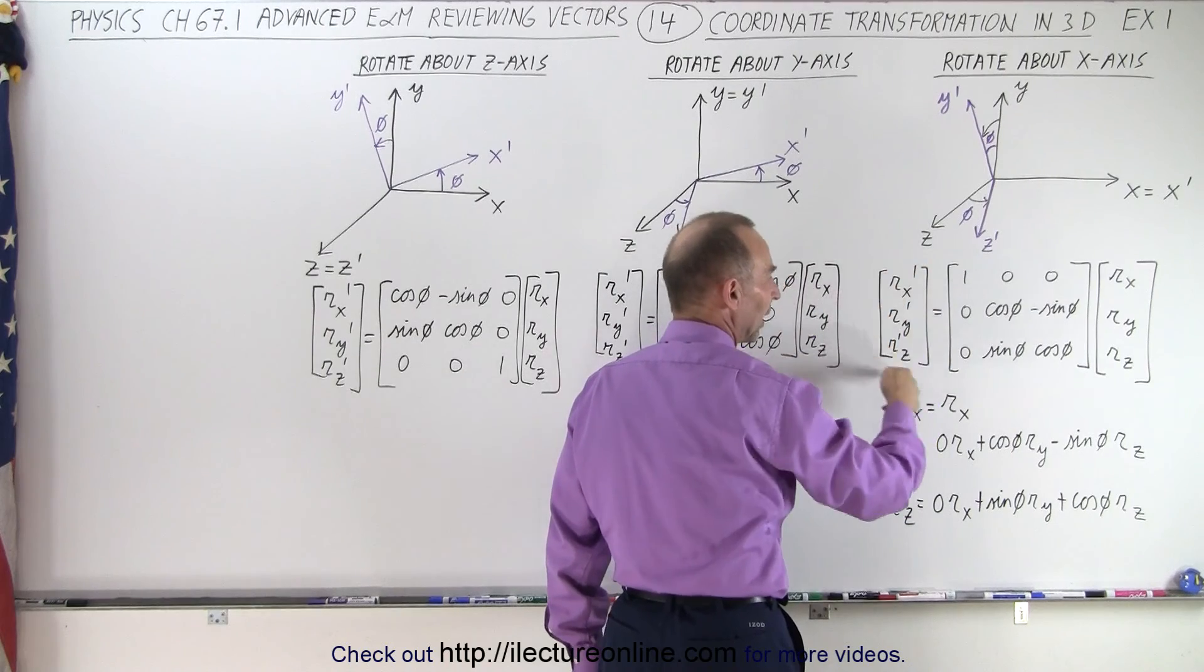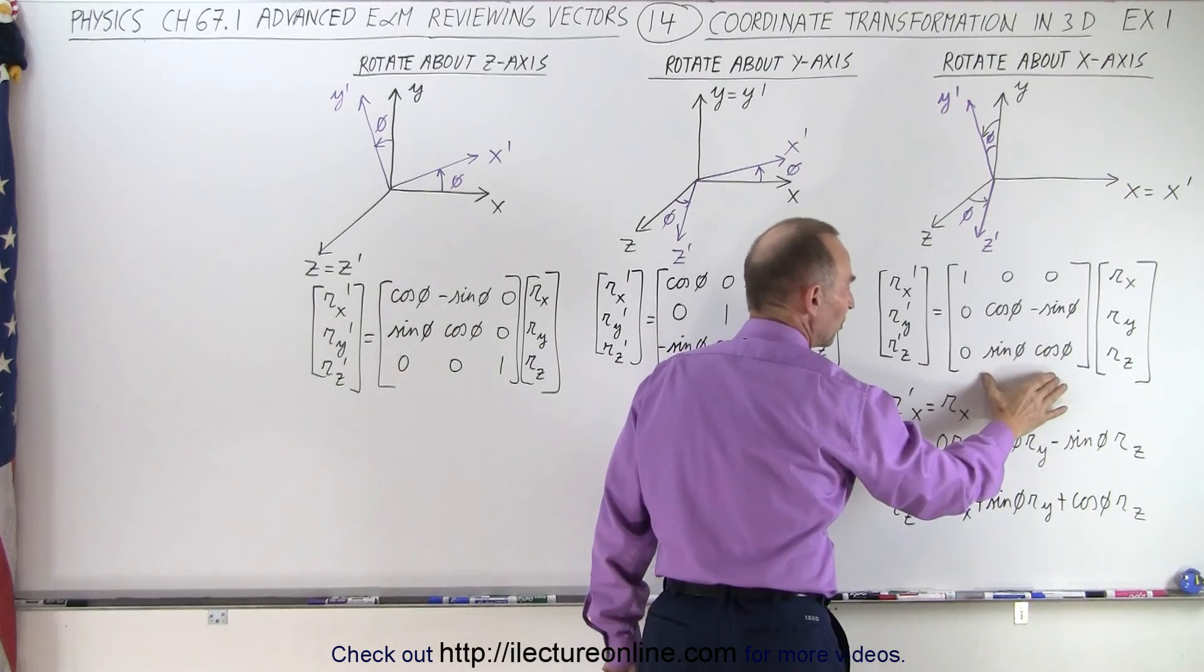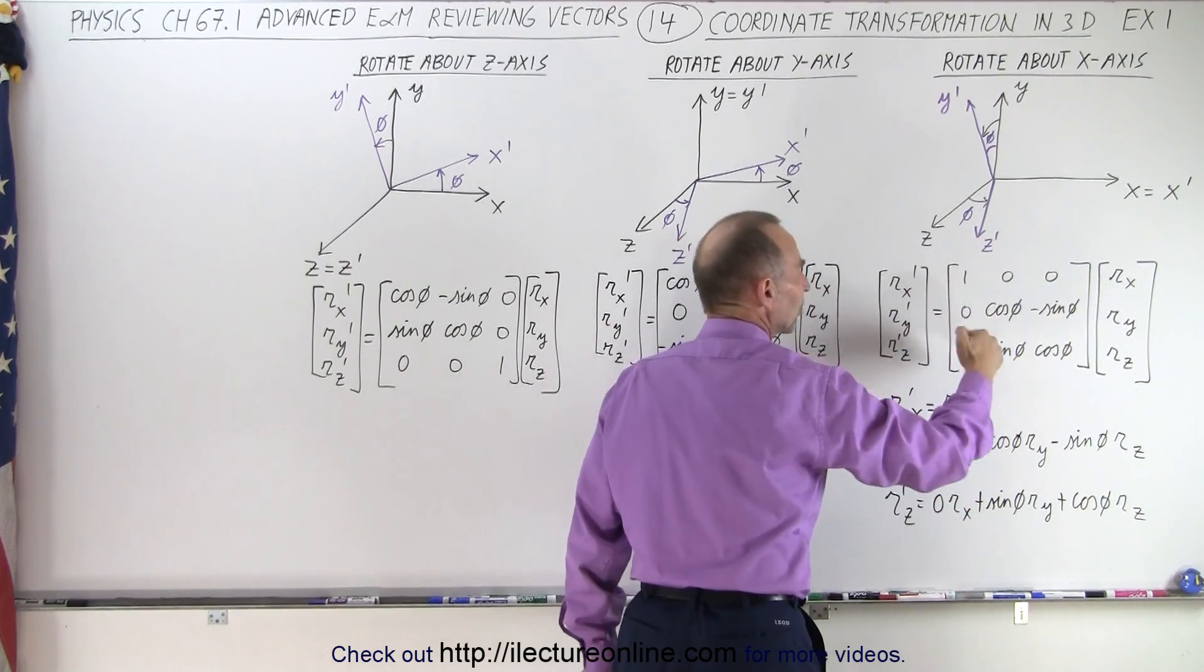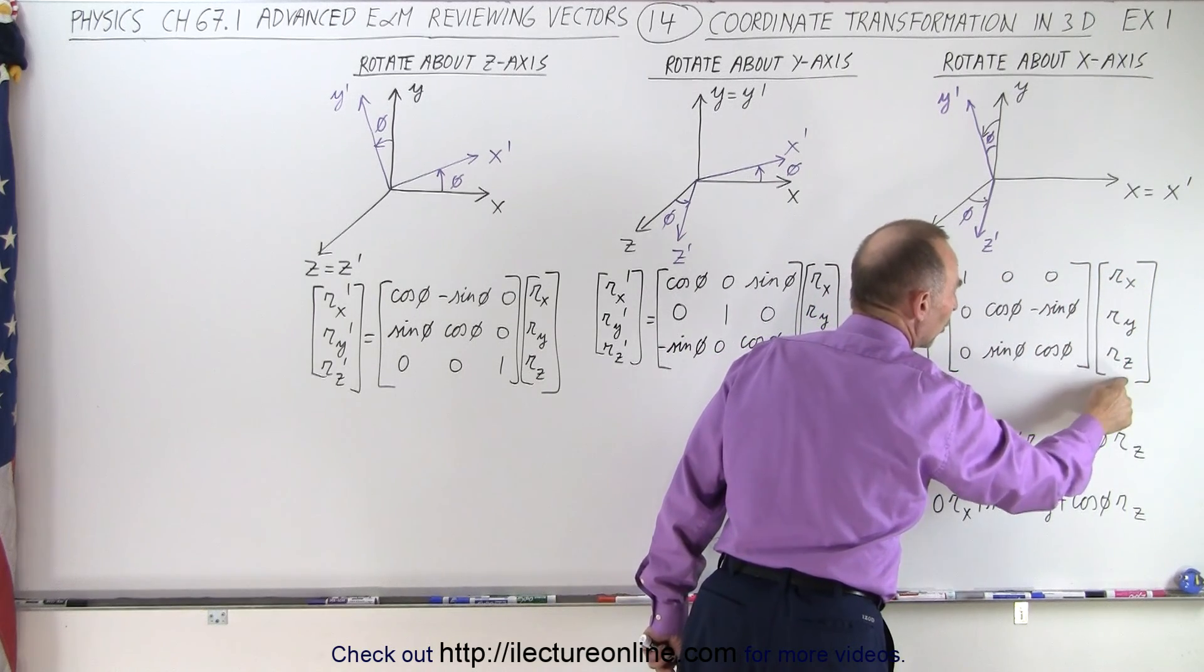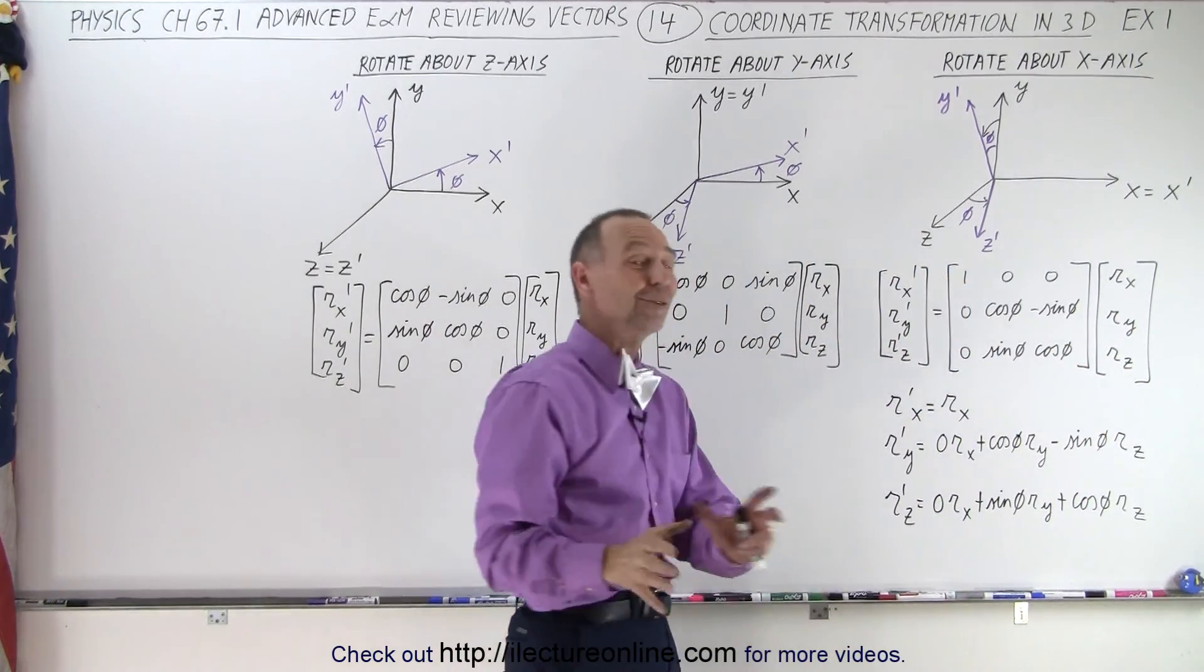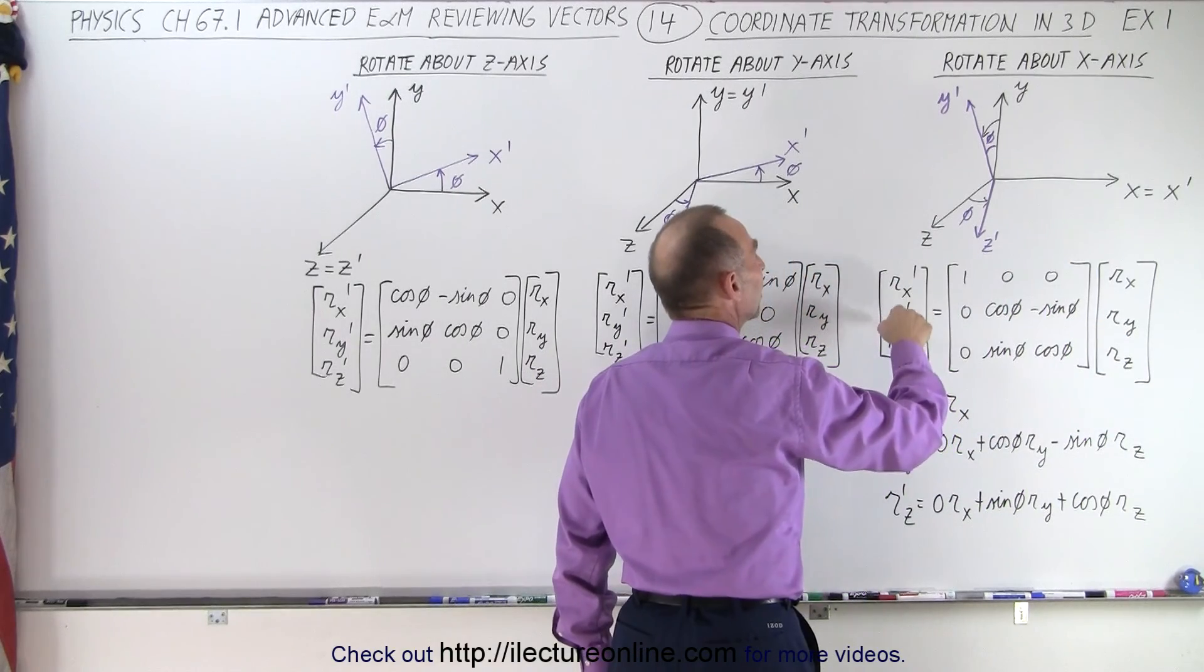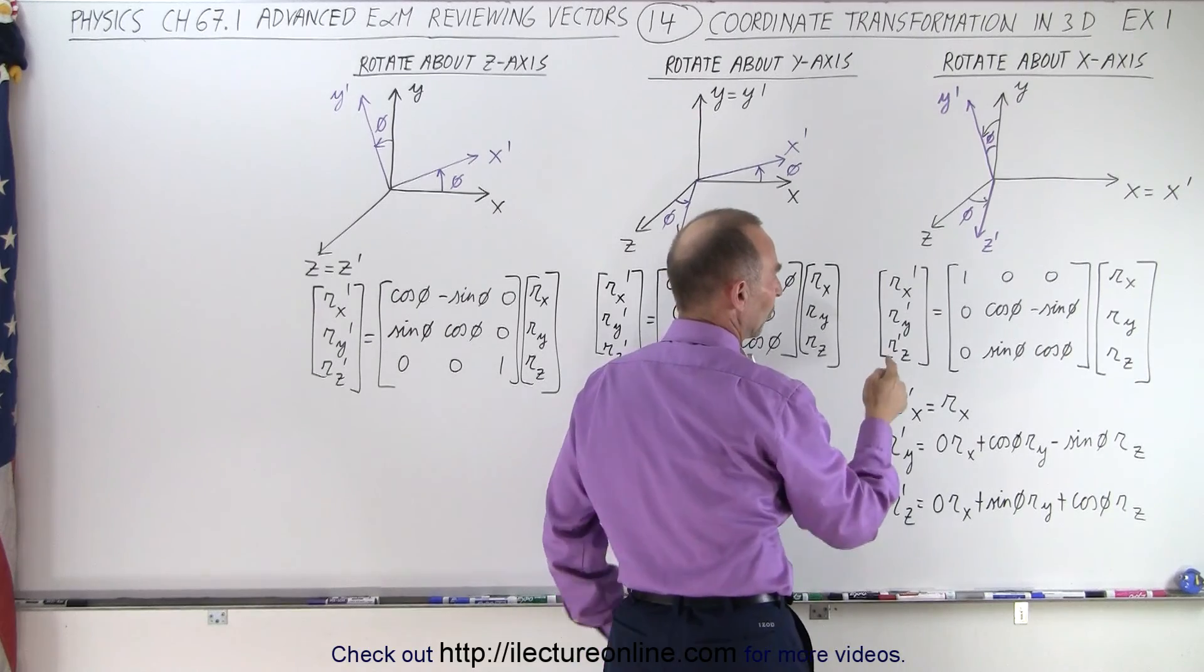If we now multiply the RX prime, RY prime and RZ prime with the transformation matrix, when we take the transformation matrix, we multiply times the RX, RY, RZ components or the magnitude of the components of the original vector. We get the same vector now expressed in the transformed coordinate system.